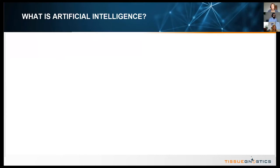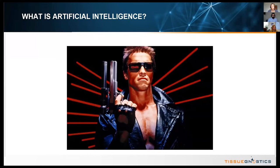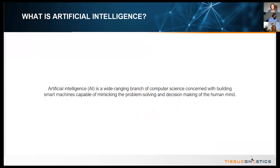Many of us have already heard of artificial intelligence from pop culture or Hollywood movies — mostly gross overestimations or doomsday scenarios. Although AI can in some cases be a controversial tool, we are here to discuss it in the context of histopathology, where these tools exist primarily to lessen your workload, increase accuracy of your analysis, and generally improve lives. So what is artificial intelligence? It is a wide-ranging branch of computer science concerned with building smart machines capable of mimicking problem solving and decision-making of the human mind.